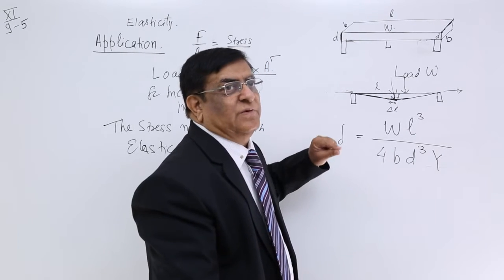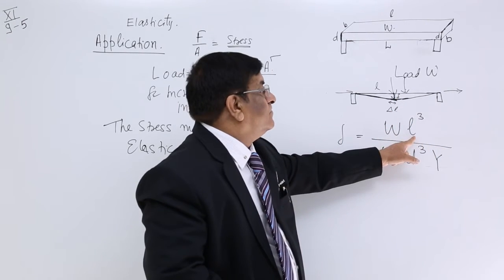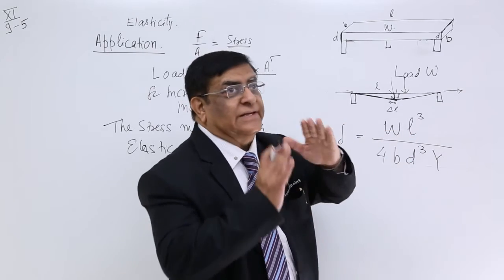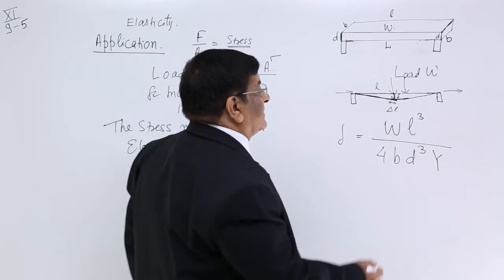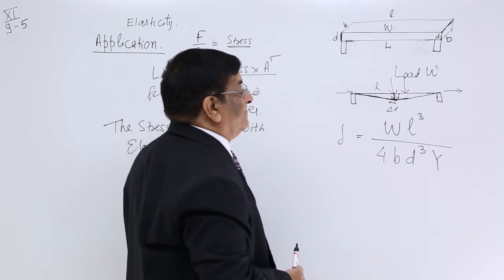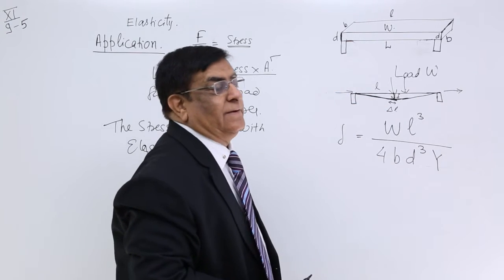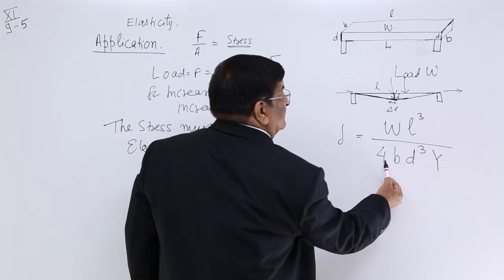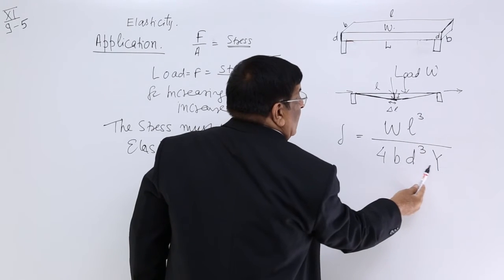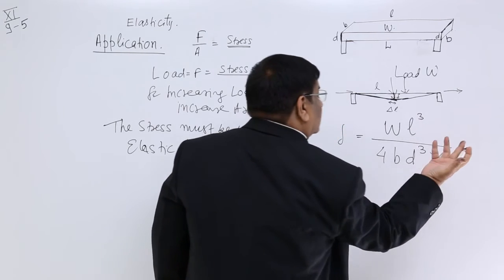So we just observe what should be more, what should be less. If length is more, that is we call it span. If this span is very long, span become two times, only two times, the depression become eight times. So we should not increase length between the two walls, because a small percentage of increase in length will be three times multiplied to give the depression large. We want this depression should be as small as possible, so that it will return back. That means all these quantities should be large. B should be large, D should be large, thickness should be large. And Y, this also should be large. So we use a material, steel, because steel has got maximum Young's modulus.